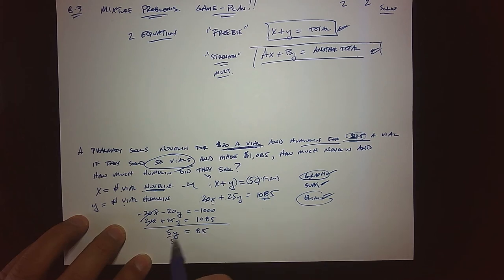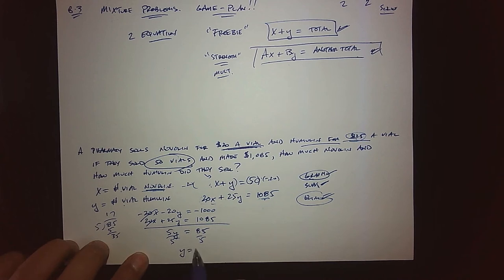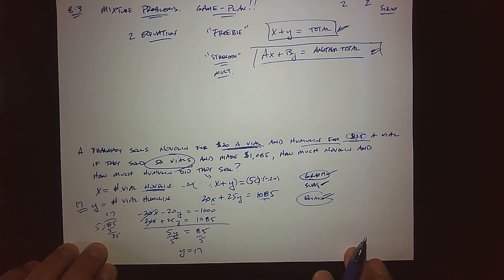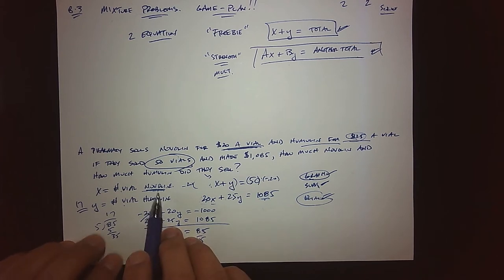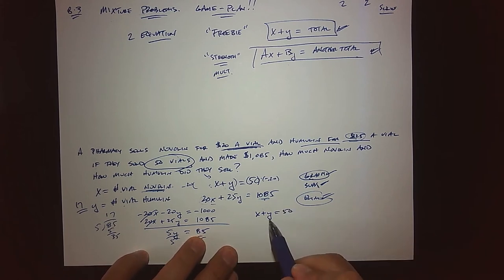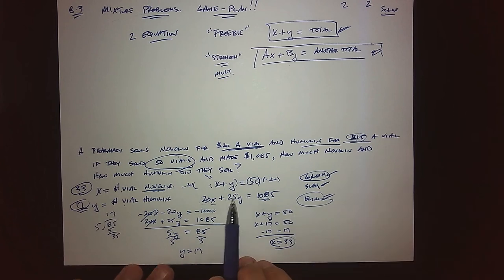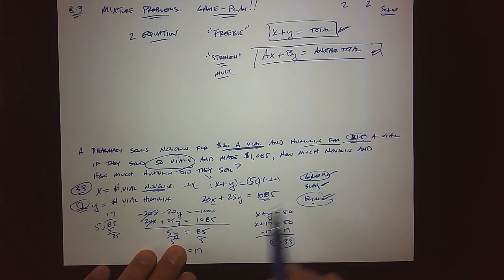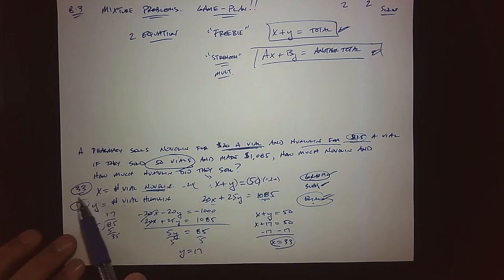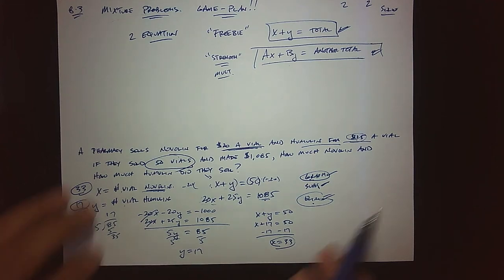After the x's cancel, we're left with 5y equals 85. Dividing both sides by 5 gives y equals 17, so there were 17 vials of Humulin given. For x, instead of eliminating y, I'll substitute y equals 17 back into the simpler equation. Subtracting 17 from both sides gives x equals 33 — so 33 vials of Nobelin were sold and 17 vials of Humulin were sold.